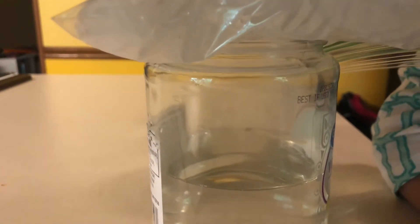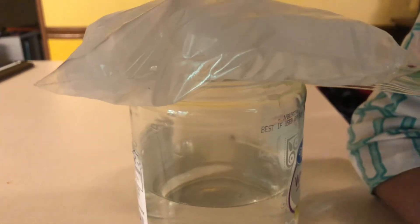The cloud forms in the jar because the hot water evaporates, turning into a gas, which we call water vapor. Right.